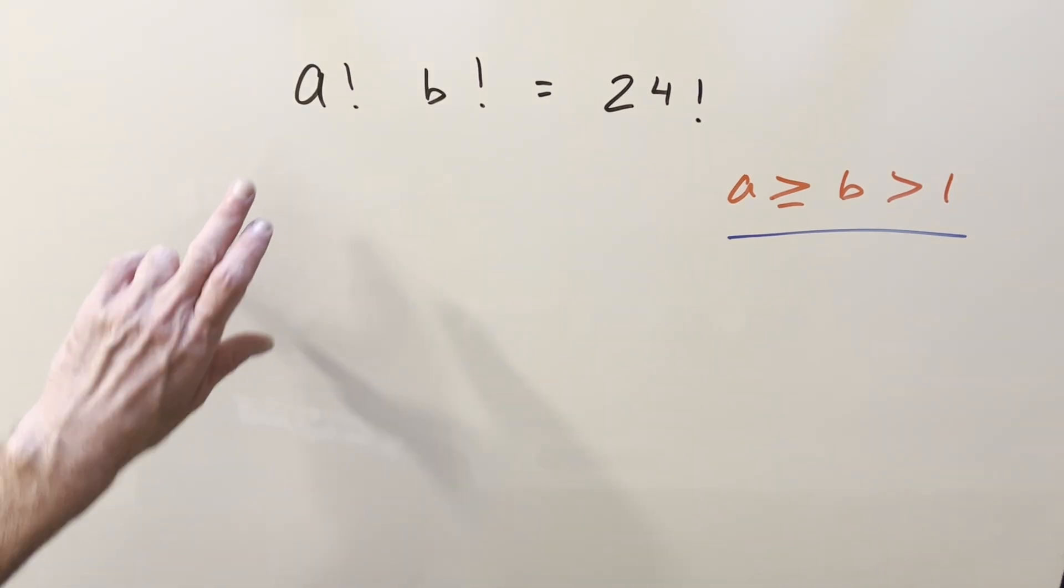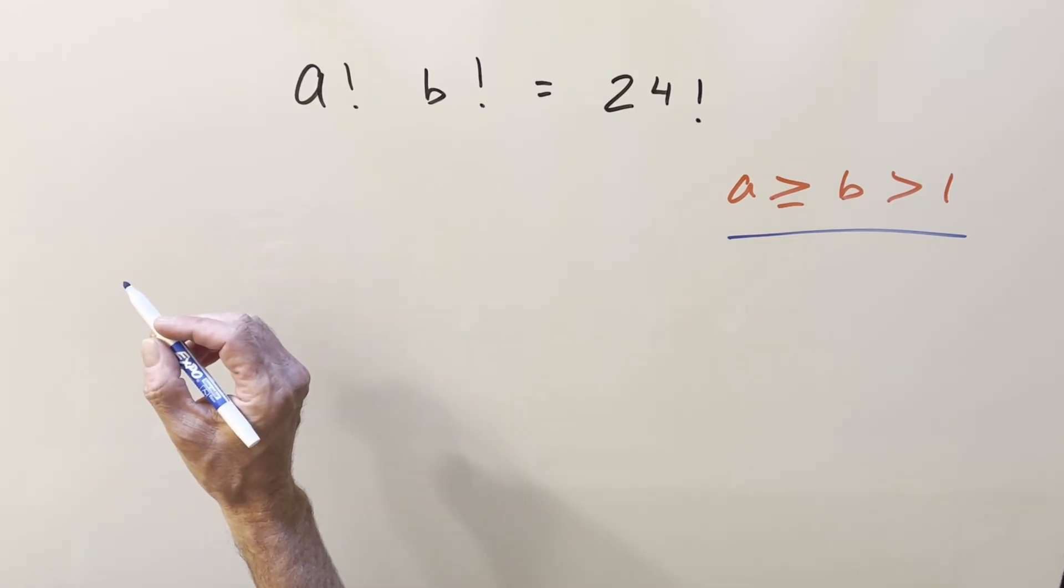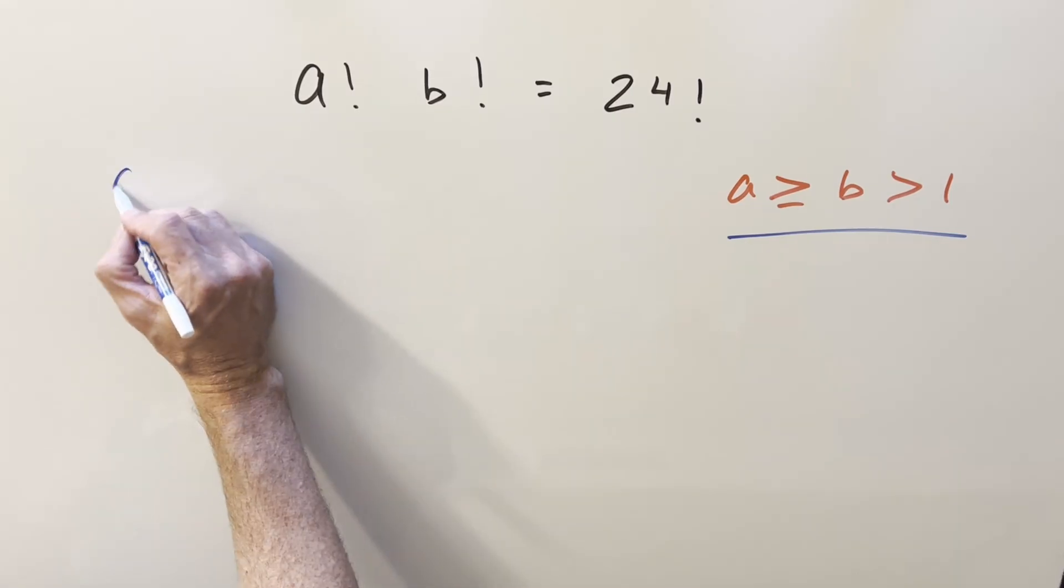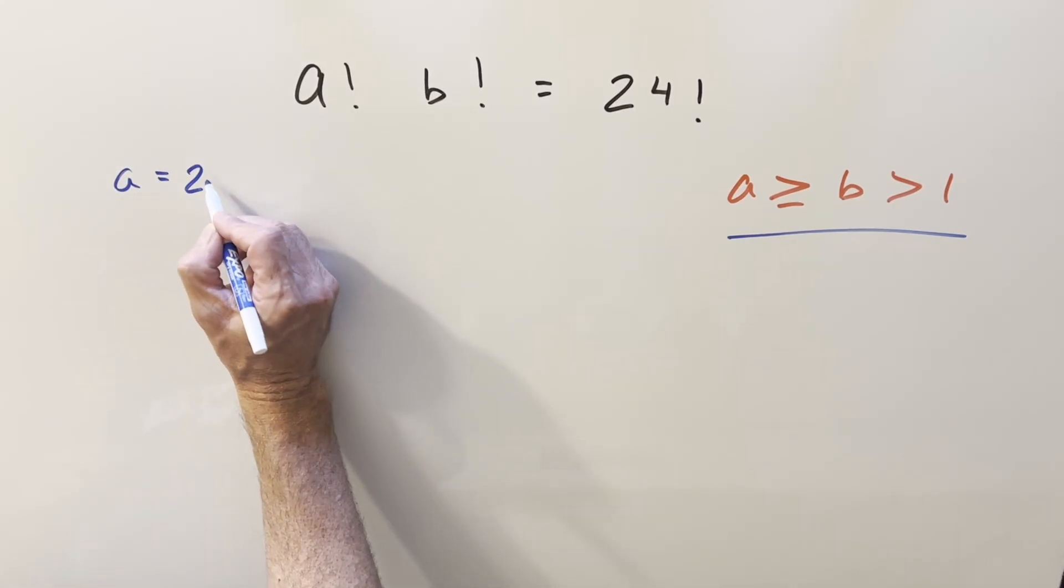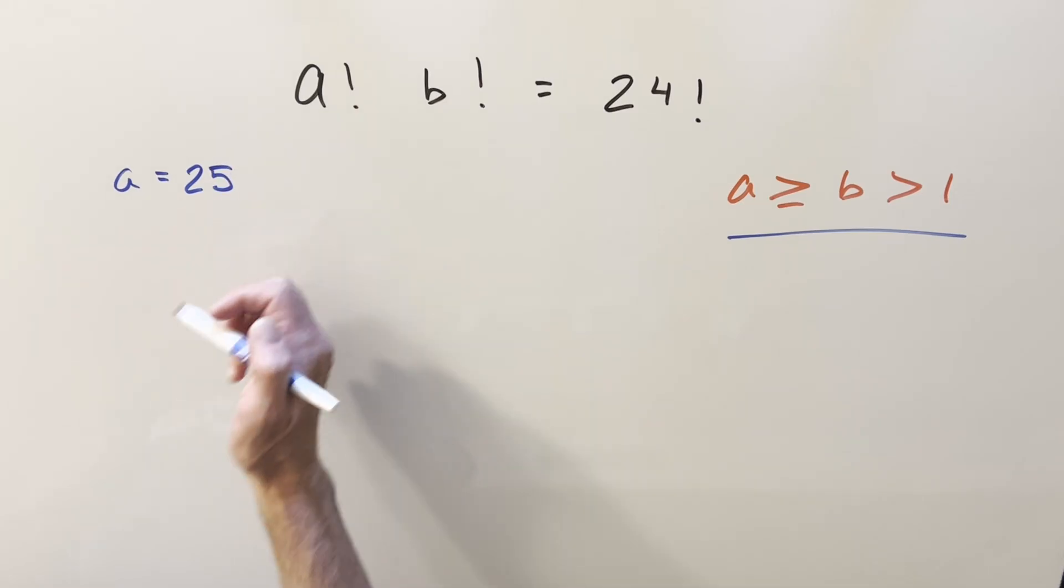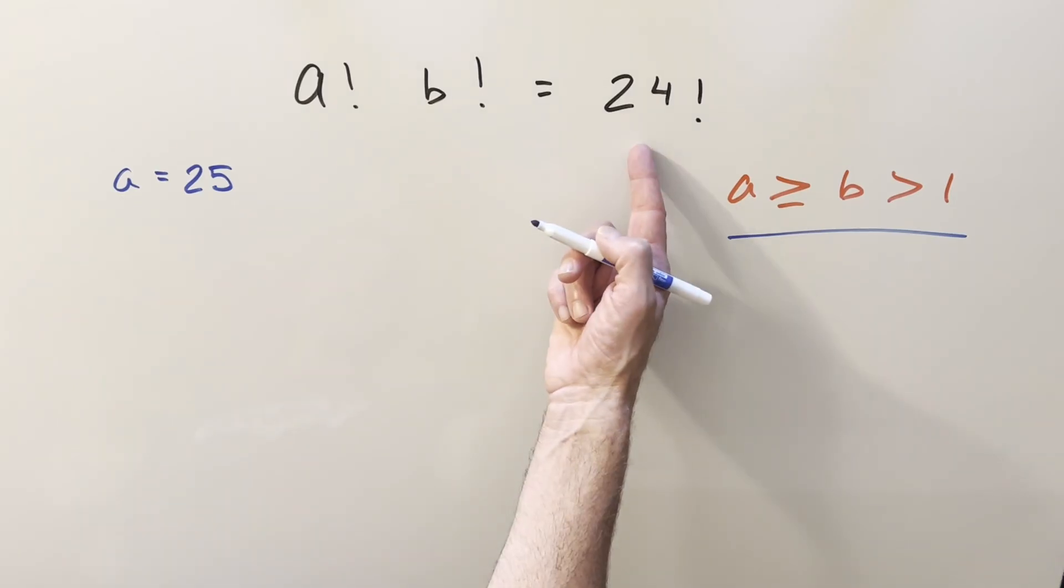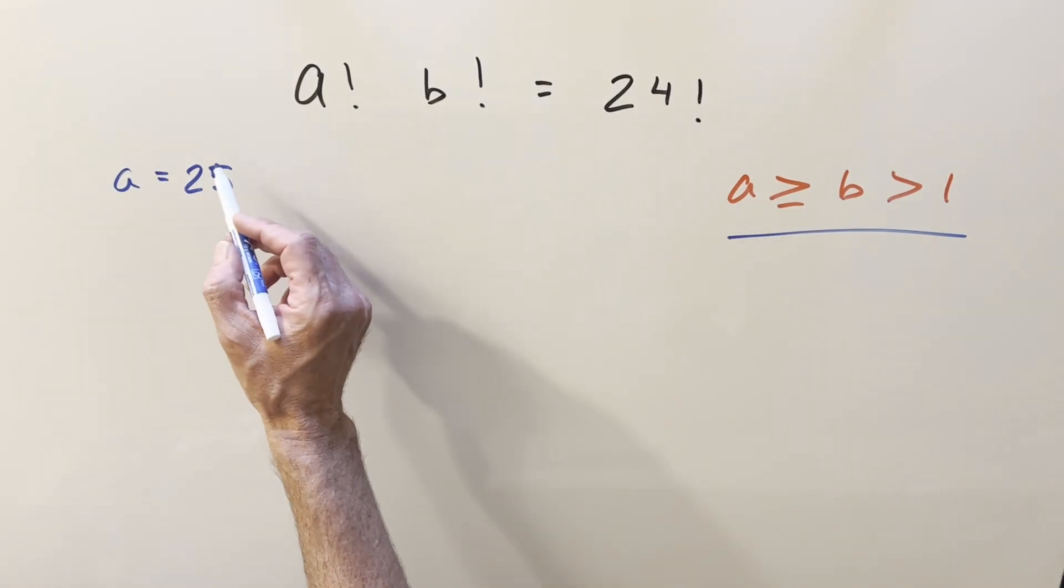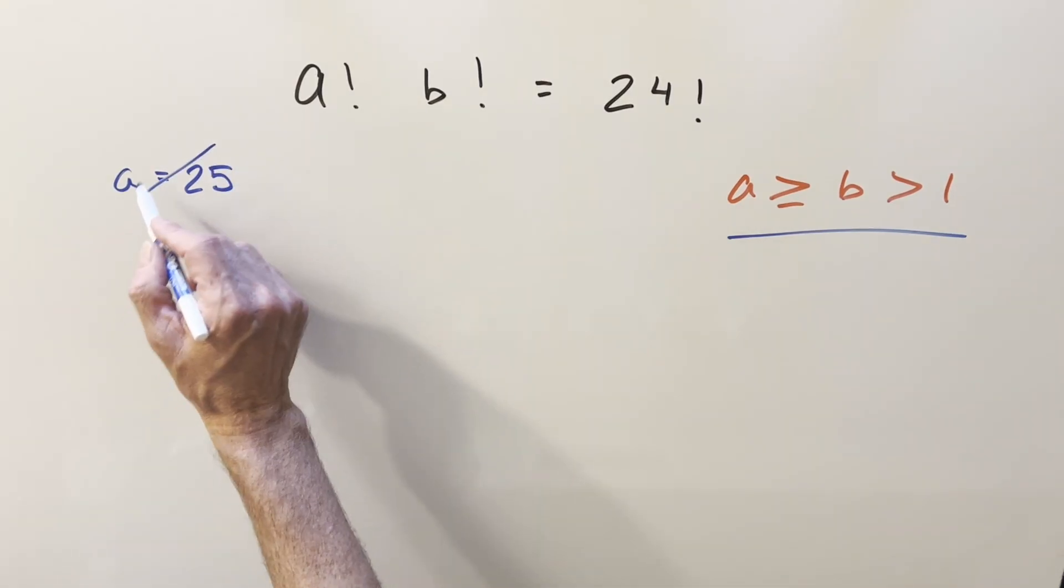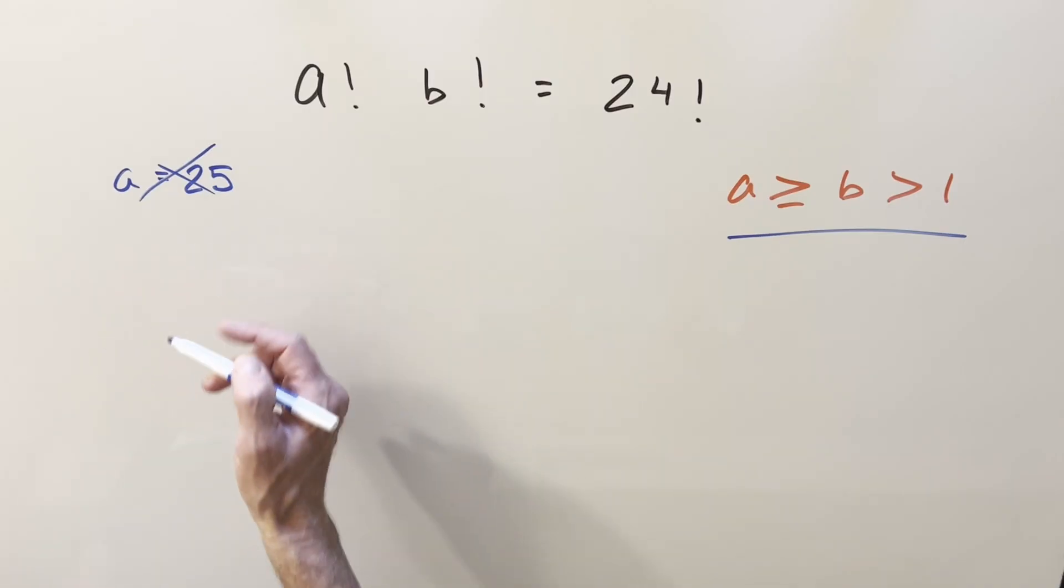Now just trying some values, I think we can get close to it pretty fast. First of all, let's do something crazy and kind of wrong. We can't have a equal to 25, right? Because if a is 25 already, the left side is going to be greater than the right side. So our starting point is going to be a values that are less than 25.